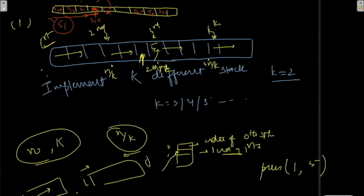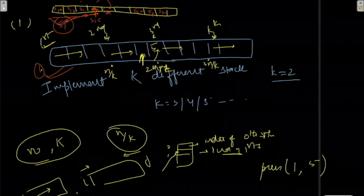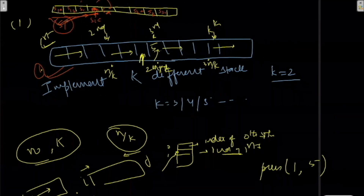So first try to implement the fixed-size version. Once that is done, then try to do the dynamic shifting implementation as well. But keep in mind this second implementation will be a little more complicated and will have a higher time complexity because you have to keep on moving the elements. Make sense? Cool.